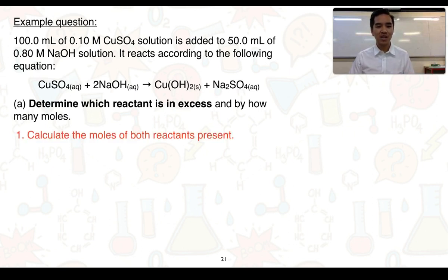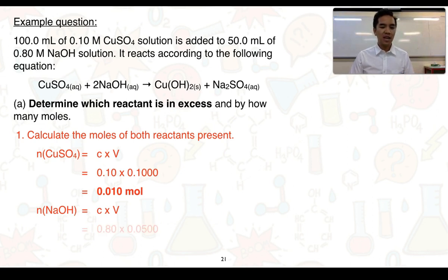Number one, calculate the moles of both reactants present. So we've got 100 mL of 0.10 molar copper sulfate, that's one reactant, reacting with 50.0 mL of 0.80 molar sodium hydroxide solution, there's the second reactant. We know in this case, because we've got volume and concentration, we can use the formula N equals C times V. So starting off with copper sulfate, we have 0.10 multiplied by 0.1000. This gets us 0.010 mol. I've written that to two significant figures. Looking now at sodium hydroxide, again, N equals C times V. This is equal to 0.80 times 0.0500, and we get 0.040 moles, again, to two significant figures.